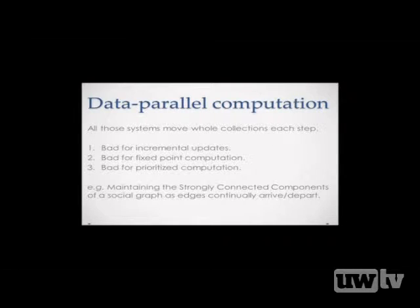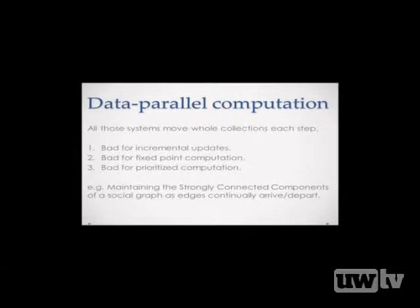Similarly, with fixed-point loop computations, each time around the loop these systems process all the data over and over again. If the data is approaching a fixed point and there's not a lot of change each iteration, you'd be much happier if the system only did work proportional to the amount of change. There's also this other pattern of prioritized dataflow computation, where you'd like some records to flow through the dataflow a little faster than others — they can preempt some computation. These are things that dataflow graphs don't express particularly well.